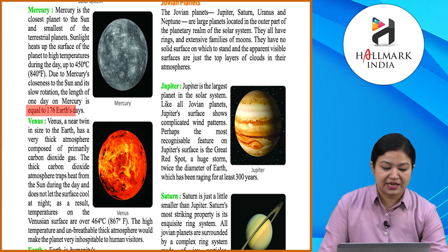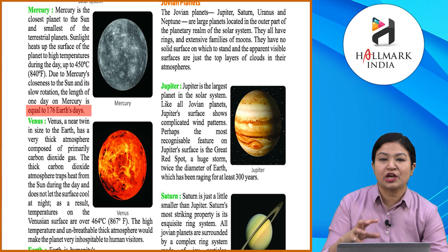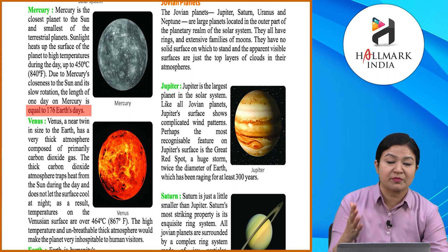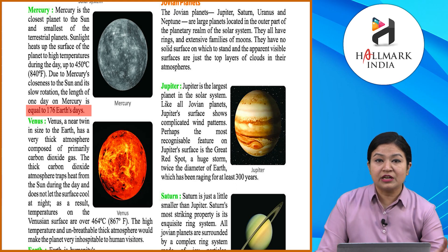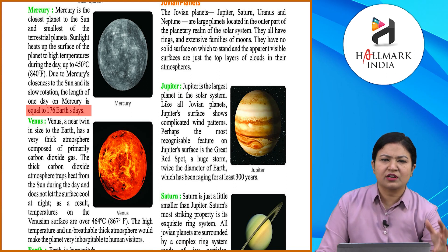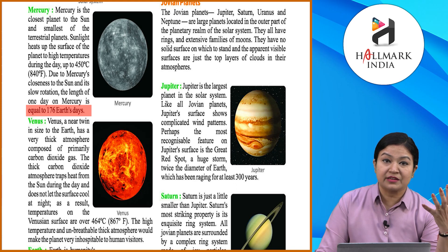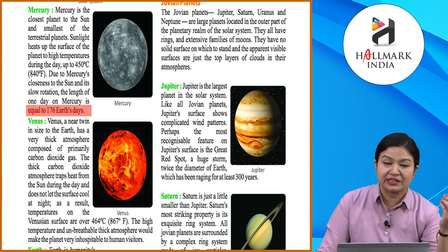Mercury is the closest planet to the Sun, so it receives the most intense heat from it. The days on Mercury are very long — 176 Earth days are equal to one day on Mercury.